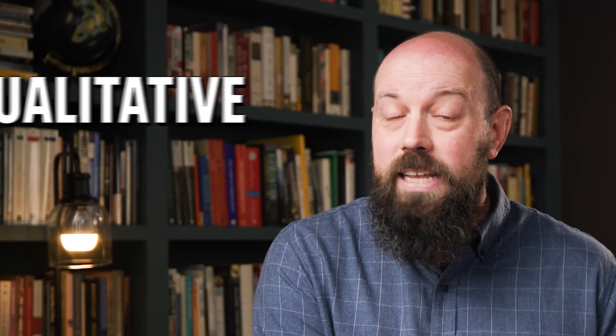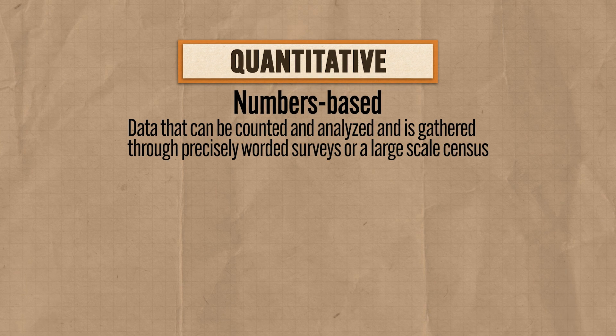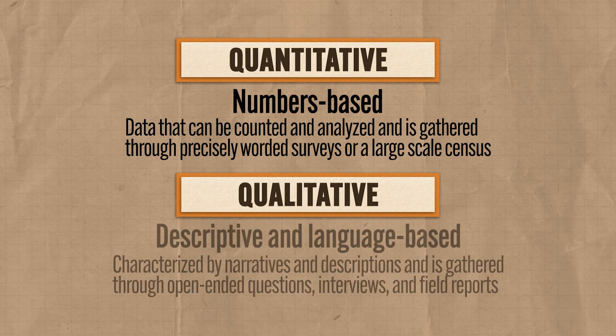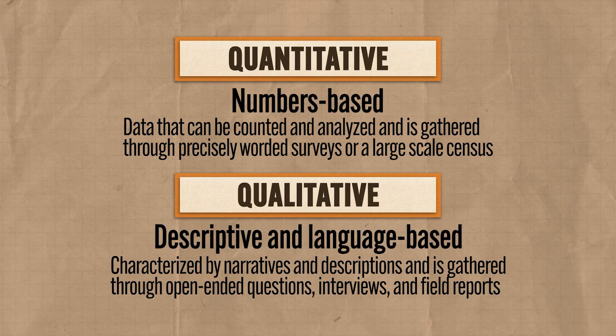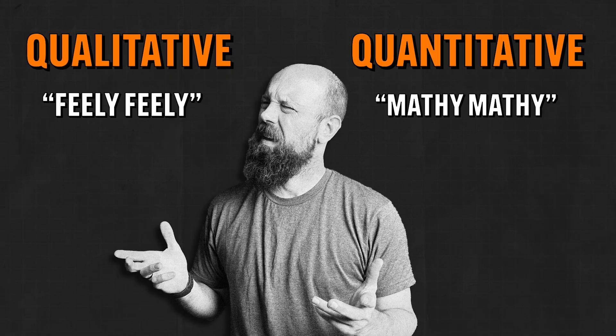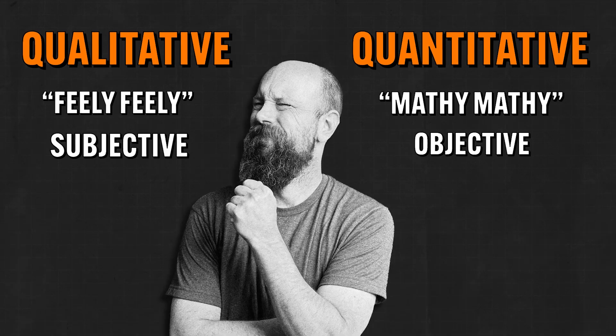In order to make plans for the future, city governments collect and use both qualitative and quantitative data. Quantitative refers to data that can be counted and analyzed, gathered through precisely worded surveys or a large-scale census. Qualitative refers to data characterized by narratives and descriptions, gathered through open-ended questions, interviews, and field reports. Or dumbed down: quantitative is mathy-mathy, and qualitative is feely-feely. To say it another way, quantitative data is objective while qualitative data is subjective.